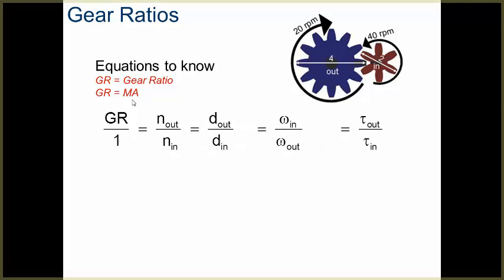So if you know your number of teeth, you can find your gear ratio by just finding the number of teeth out over the number of teeth in. You can also find your gear ratio if you know the diameters, or if you know the speeds, or if you know the torque.